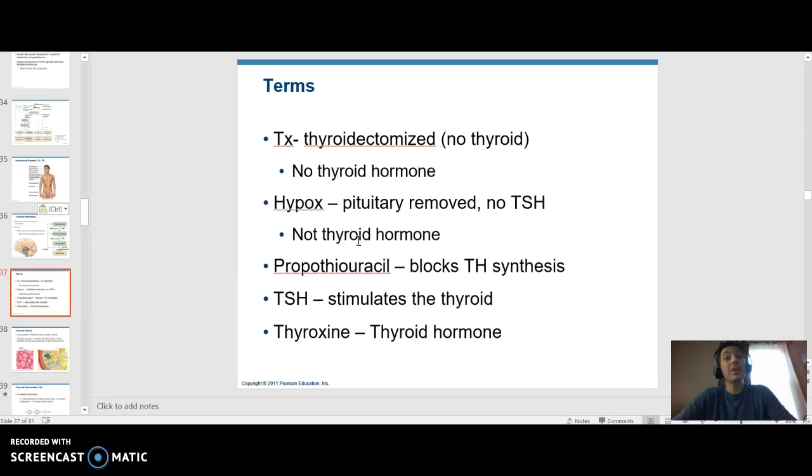You will be injecting your three rats with three different substances. I believe the first one is propothiouracil or PTU. This is a drug that blocks thyroid hormone synthesis in the thyroid gland. And so you can guess what that's going to do to thyroid hormone levels and oxygen consumption. TSH is the hormone we were talking about before. That is thyroid stimulating hormone comes from the pituitary, stimulates the thyroid gland to produce thyroid hormone.